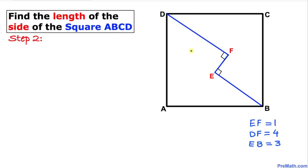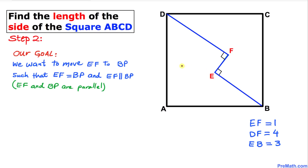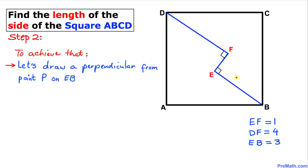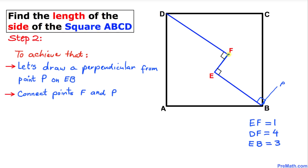Our goal is to move line segment EF to a new position BP, where P is a point such that BP equals EF and they are parallel. To achieve that, let's draw a perpendicular from point P onto line segment EB — this creates a 90-degree angle.